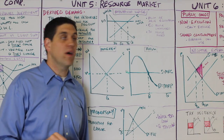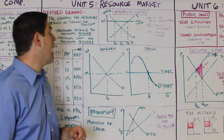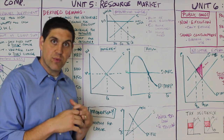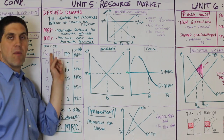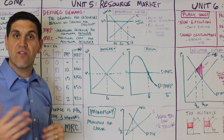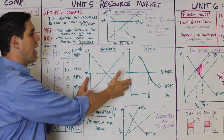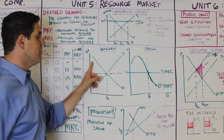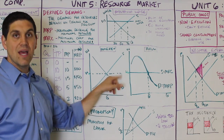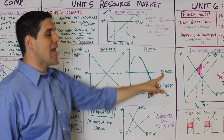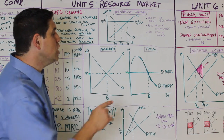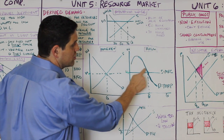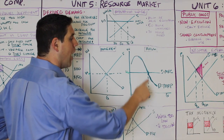In Unit 5, we talk about the resource market — supply and demand for resources: land, labor, and capital. The first concept is derived demand — the demand for resources depends on the products they produce. So the demand for cheese depends on the demand for pizza. MRP is the additional revenue generated from another resource; MRC is the additional cost. This creates a graph: in a perfectly competitive resource market, demand is by firms and supply by individuals. It sets a wage — the firm is a wage taker. The wage is the MRC. You hire where MRP equals MRC.